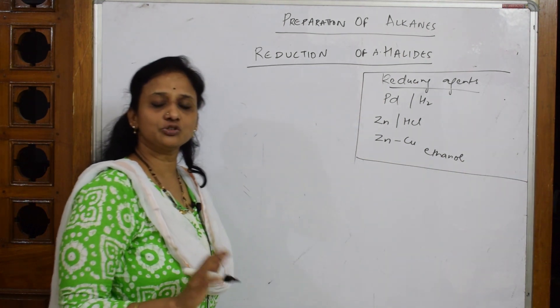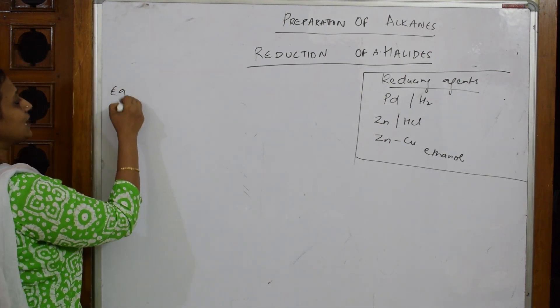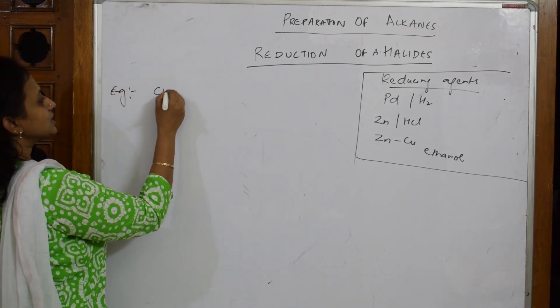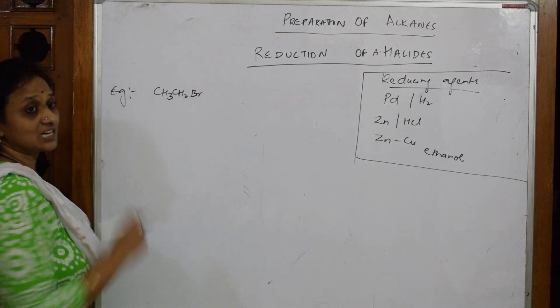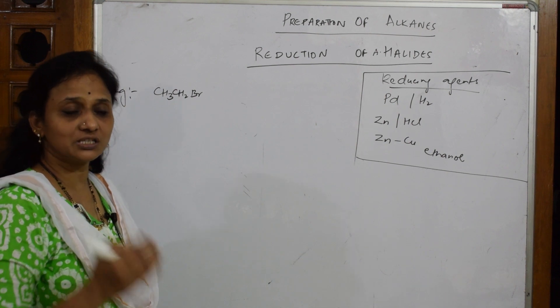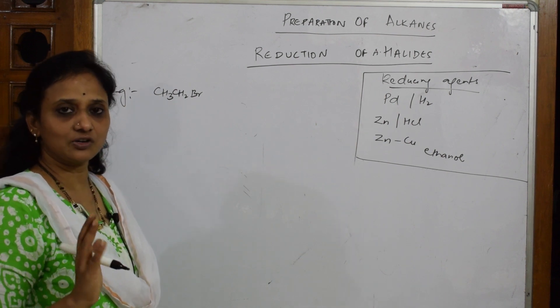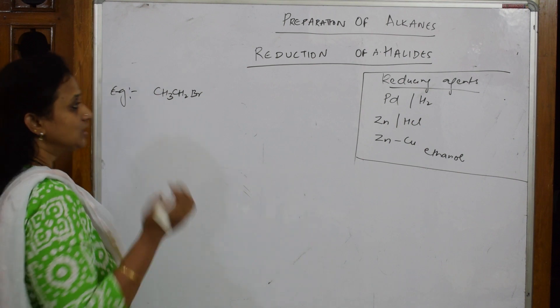Whenever you see such metals on the top of the arrow, you need to do the reduction. Let's take an example - I'm taking an alkyl halide, for example CH₃CH₂Br. Why did you start with Br? You would have started with chlorine, isn't it?